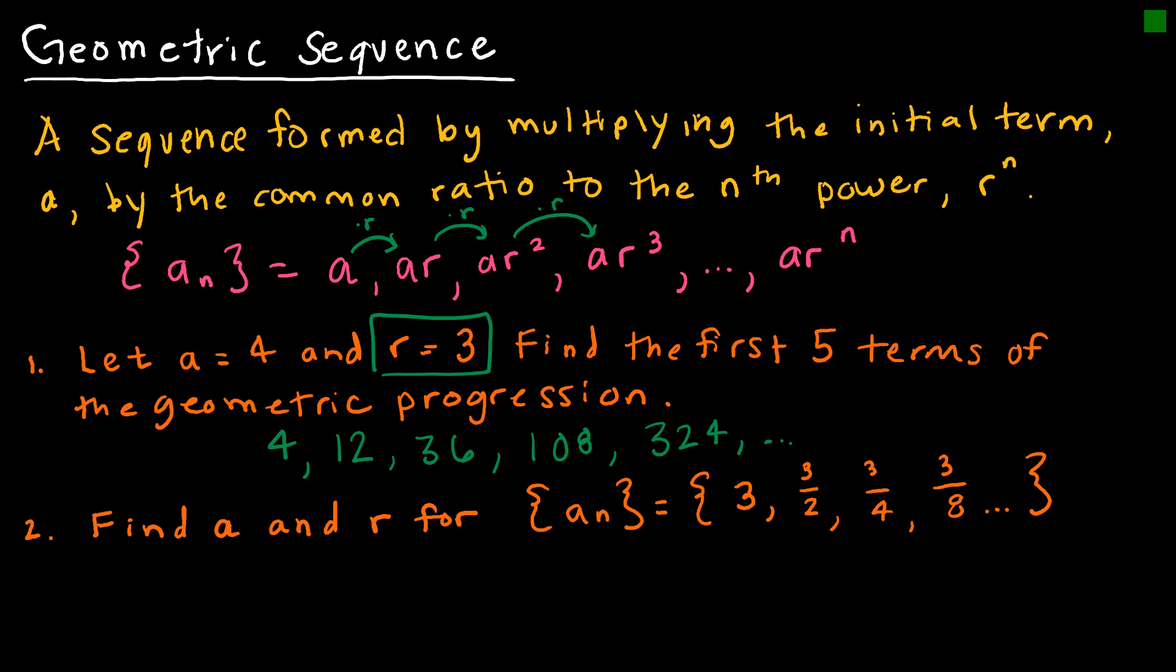The second one is saying find a and r. And again a I don't have to do any thought to find. A is 3 because a is the first term. The question is what is r? So what is the ratio?